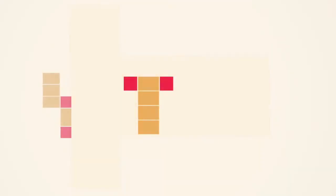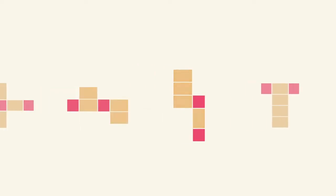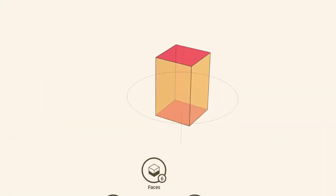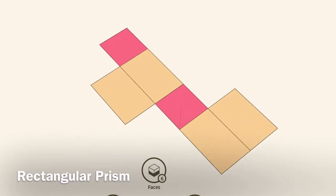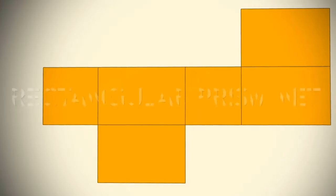They can be oriented in many different ways. There's no one proper way to orient a net. This is the same rectangular prism and this is its net.